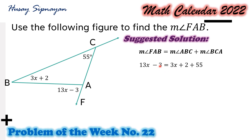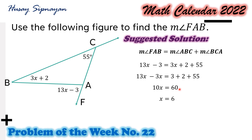So that we can isolate those terms with variables on the left-hand side. Combining similar terms, we have 10x equals 60. Dividing both sides of this resulting equation by 10, we get x is equal to 6.